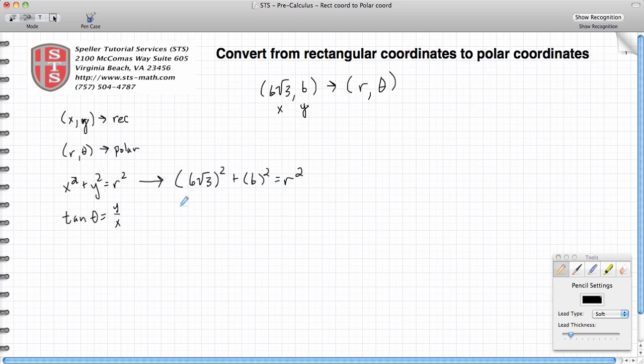Well, 6 times 6 is 36, and √3 times √3 gives us 3. And here I have 6², and that's just 36, and again that's equal to r².